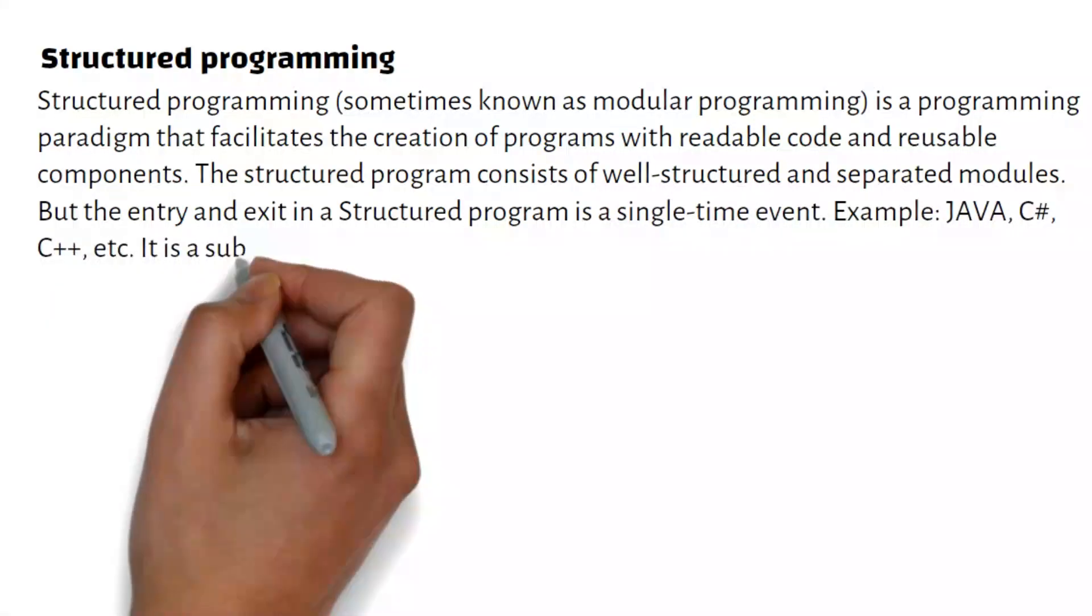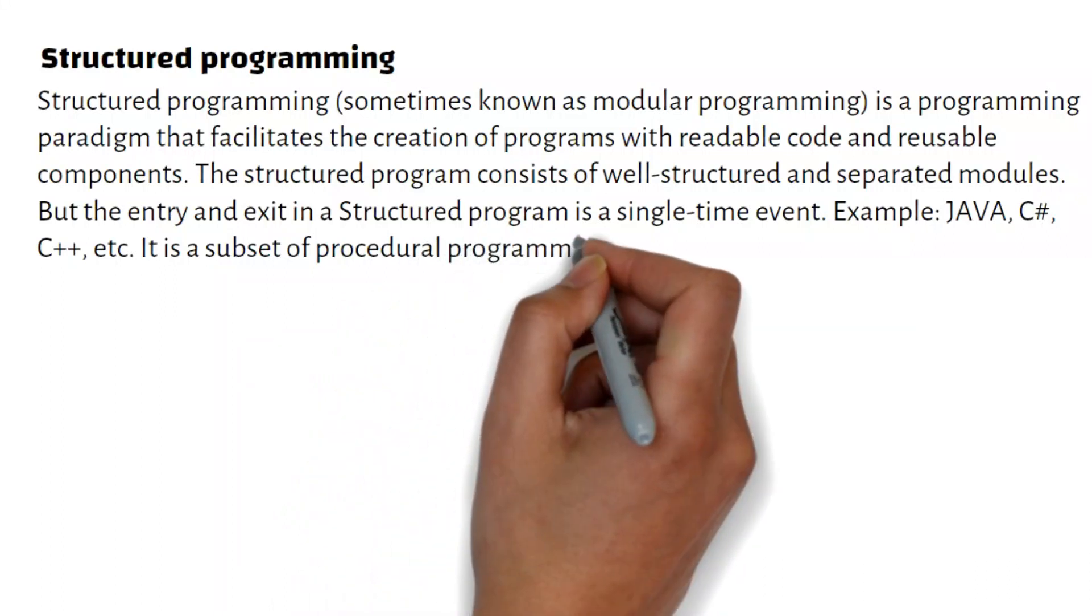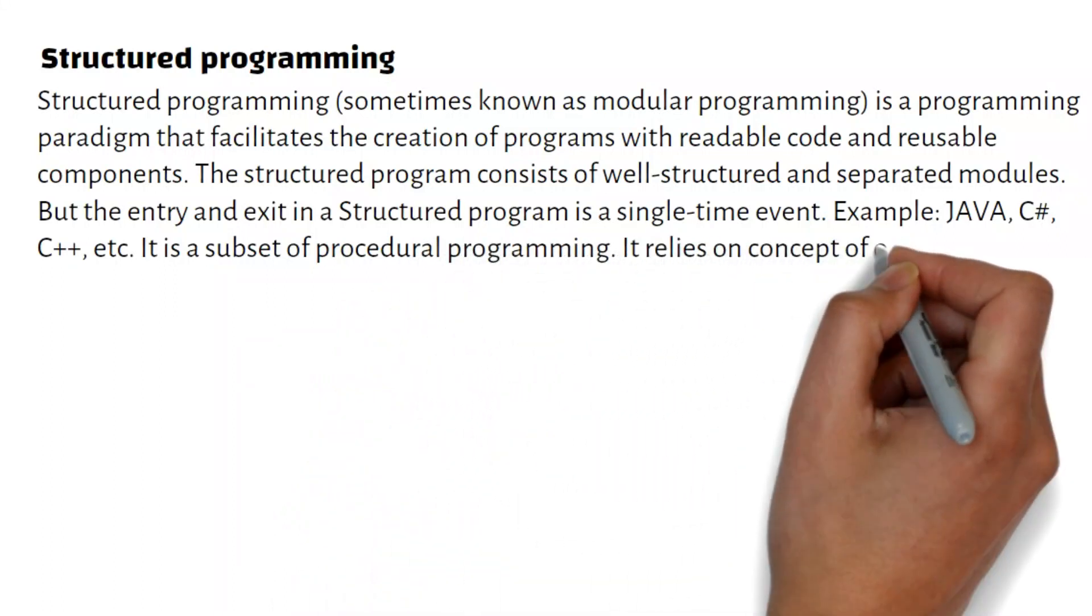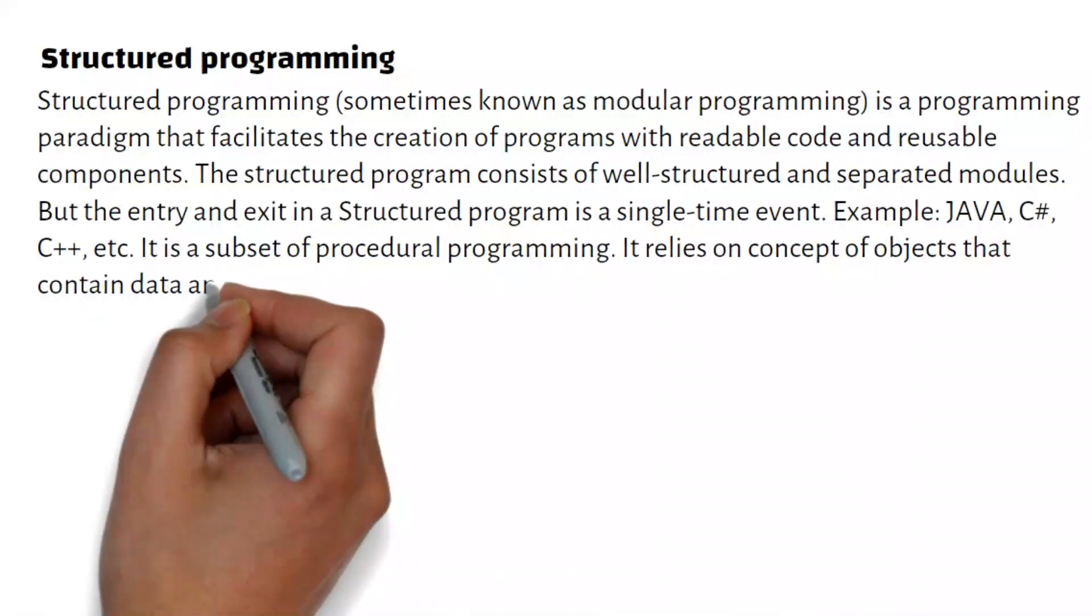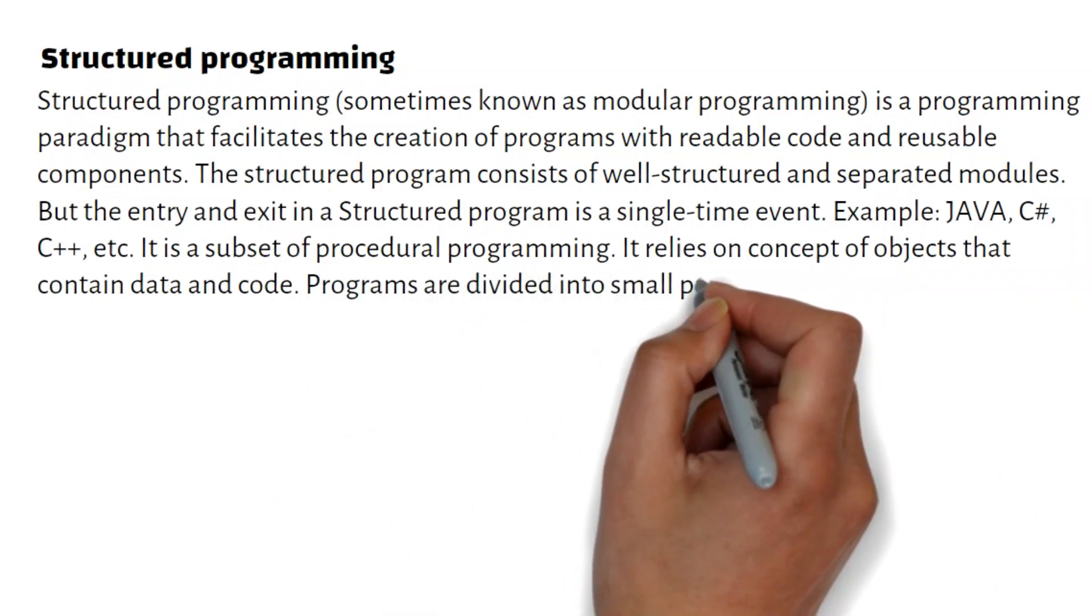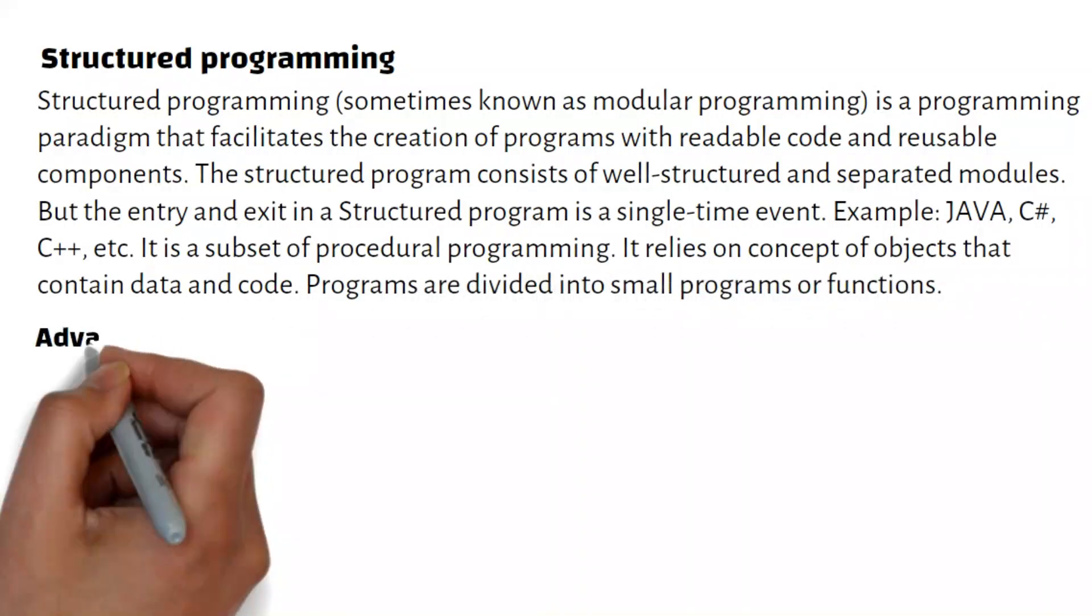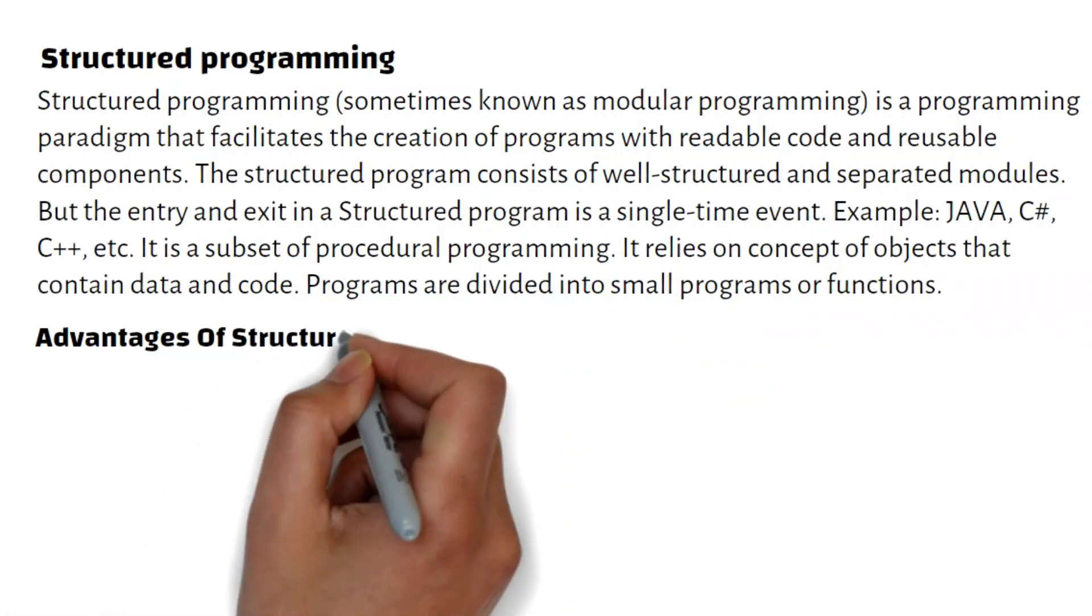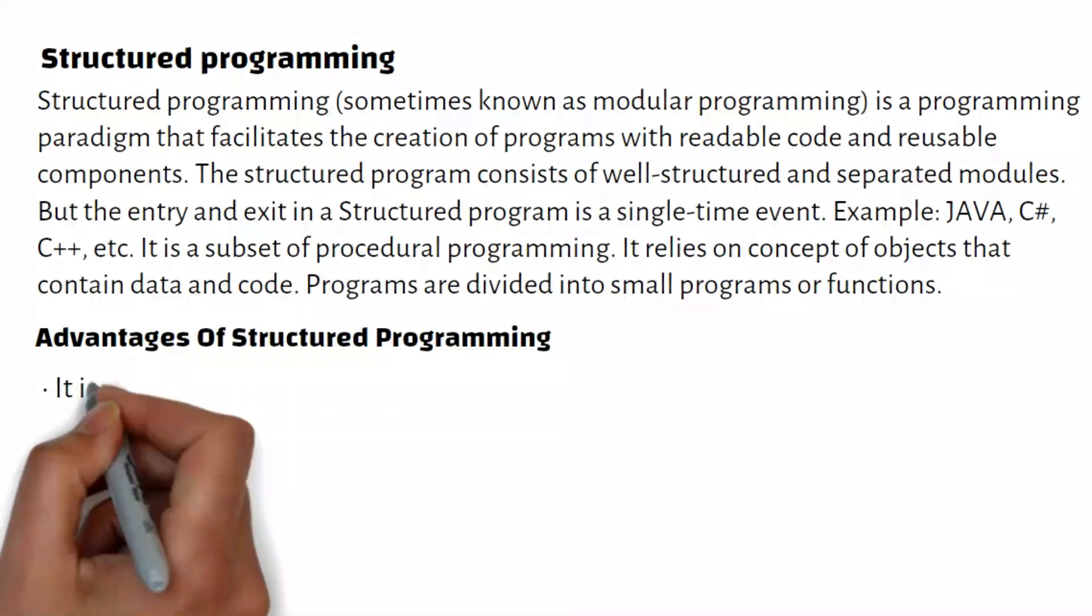Examples include Java, C Sharp, C++, etc. It is a subset of procedural programming. It relies on the concept of objects that contain data and code. Programs are divided into small programs or functions.